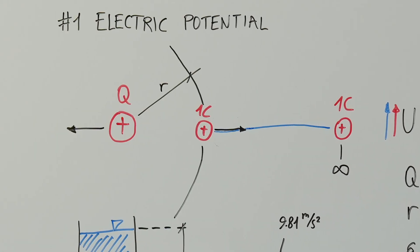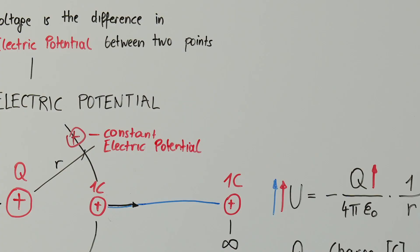Along the same radius R, the electric potential remains constant. Now, let's return to the water analogy.